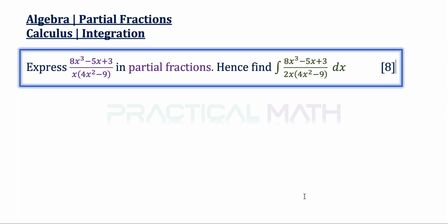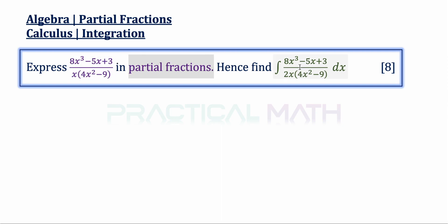In this video we'll be discussing a question on partial fractions from algebra. We will also be talking about integrations from the topic of calculus. The question goes: express the fraction with the numerator of 8x cubed minus 5x plus 3 and the denominator of x bracket 4x squared minus 9 in partial fractions. Hence, find the integration of a fraction with the numerator of 8x cubed minus 5x plus 3 and the denominator of 2x bracket 4x squared minus 9 dx. This is an 8 marks question.